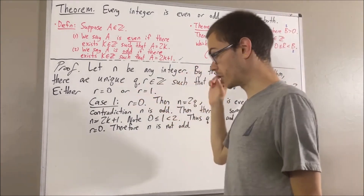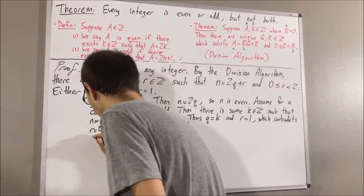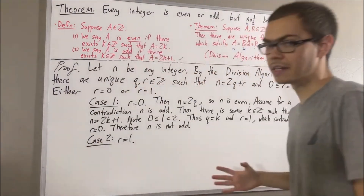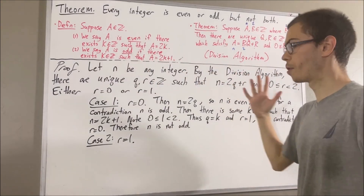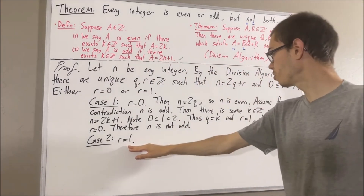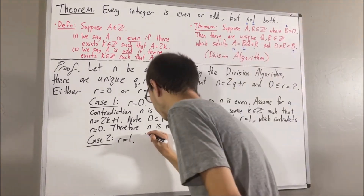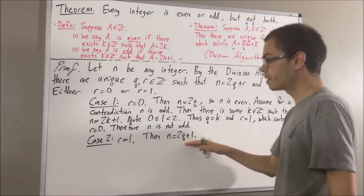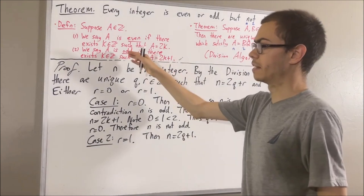Now let's move on to case 2, where r is equal to 1. Again, we want to show that n is even or odd, but not both. Since r is equal to 1, we have that n is equal to 2q plus 1. By our definition, this tells us that n is odd.